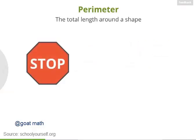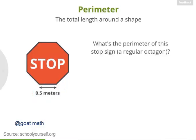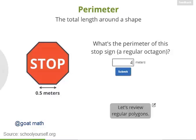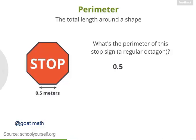Now here's a stop sign, which happens to be a regular octagon, meaning all eight of its sides have the same length. If one side measures 0.5 meters, or half a meter, what's the perimeter of this stop sign? Each side has a length of 0.5, and there are 8 sides in all, so the total perimeter is 0.5 times 8, or 4 meters.